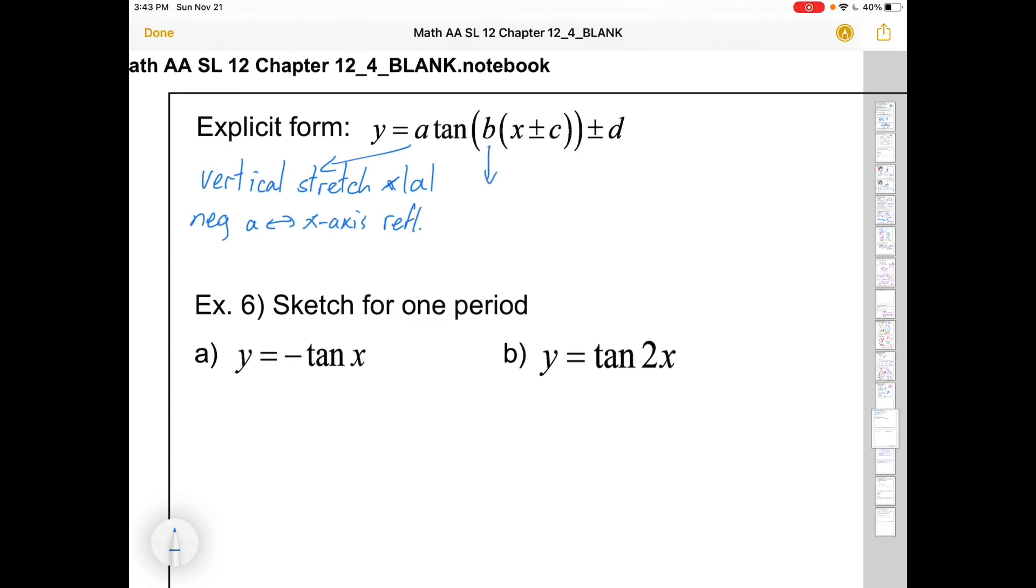B is going to be horizontal stretch by a factor of 1 over B. And that actually ends up being more helpful with the tangent than the corresponding stuff about period. B, of course, also controls period because it controls the horizontal stretchiness of it. Period for a tangent function is going to be π over B because the default period is π, not 2π.